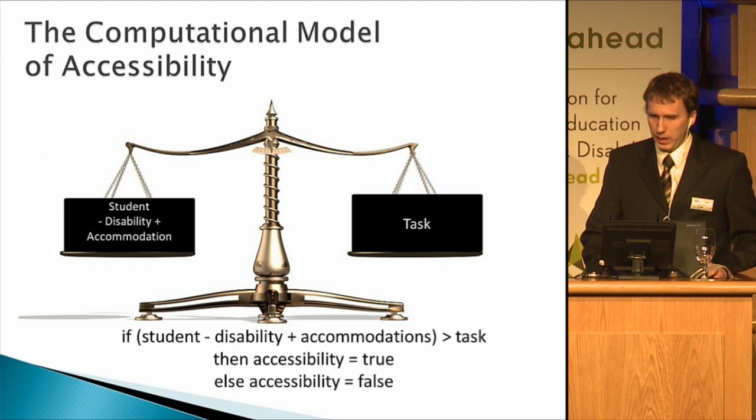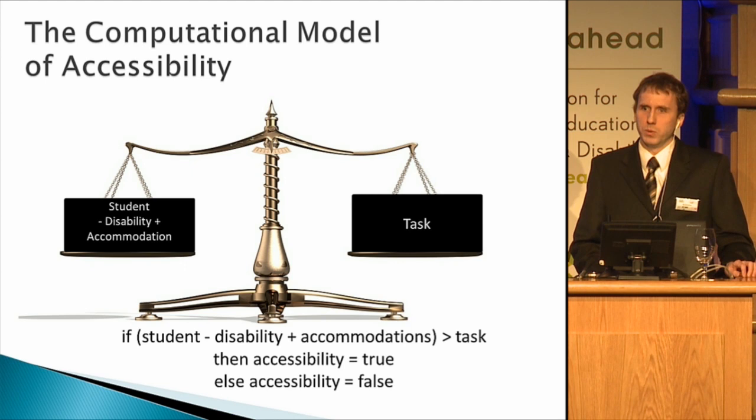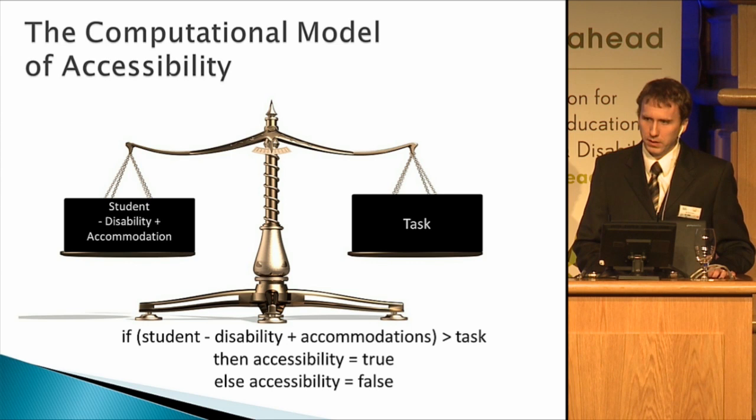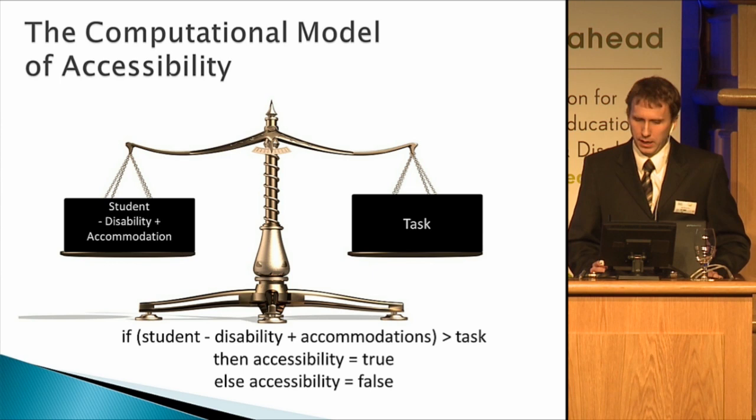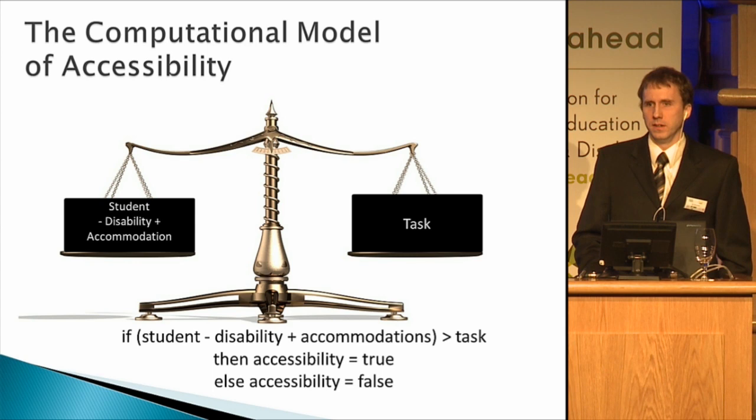How have we thought about disability? I call it the computational model of disability. If you want to put it in computer talk: if a student minus the effect of the disability plus the effect of accommodation is greater than the task, then you have something that's accessible. If you take the student, subtract the disability, add accommodation, and it's not over the hurdle, then something's not accessible. It's simple — it fits how we tend to traditionally think about this.